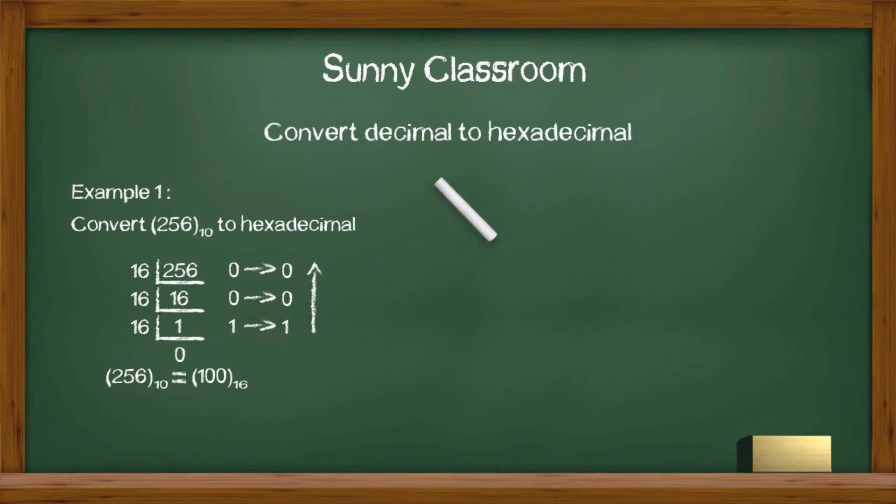Let's see one more example. Convert 7562 to hex number. Step 1. Divide this number by 16.